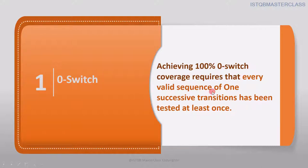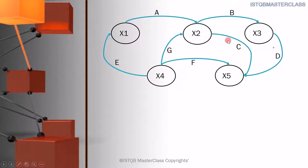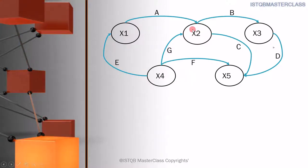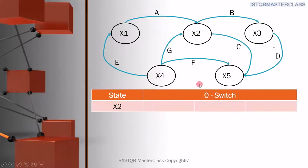We have to test the successive transitions from the given node. Let's see how to do that. This is the question, and in the question, they were talking about X2. We will have this table, and from X2, we will see how many successive nodes are going outside.